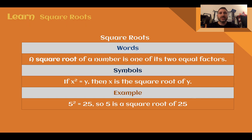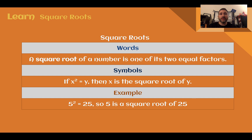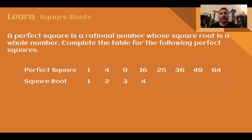Square Roots. A square root of a number is one of its two equal factors. So if you have x squared equals y, that means x is the square root of y, since x times x equals y. For example, if you have 5 to the second power equals 25, 5 would be the square root of 25, since 5 times 5 is 25. It's that equal factor that you multiply to get to the perfect square. A perfect square is a rational number whose square root is a whole number.